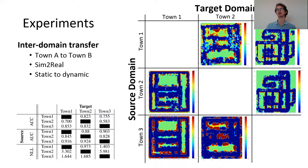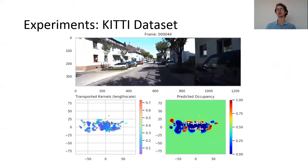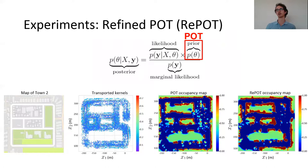Next, we wanted to see how our framework could apply to the real-world KITTI dataset. Finally, we demonstrate how POT can be used as an informative prior in Bayesian inference to further refine map quality. We term this refinement operation REPOT.